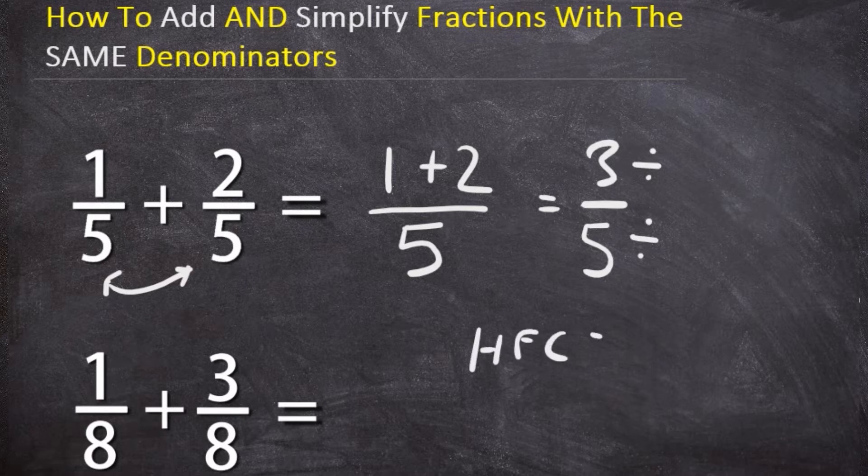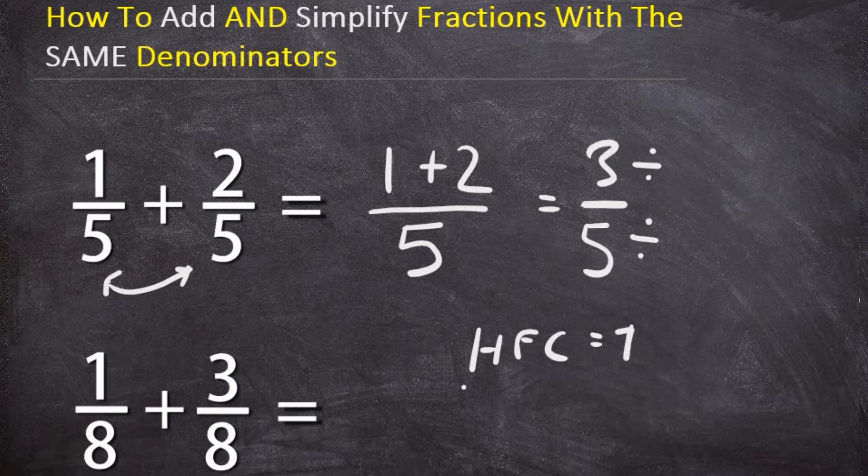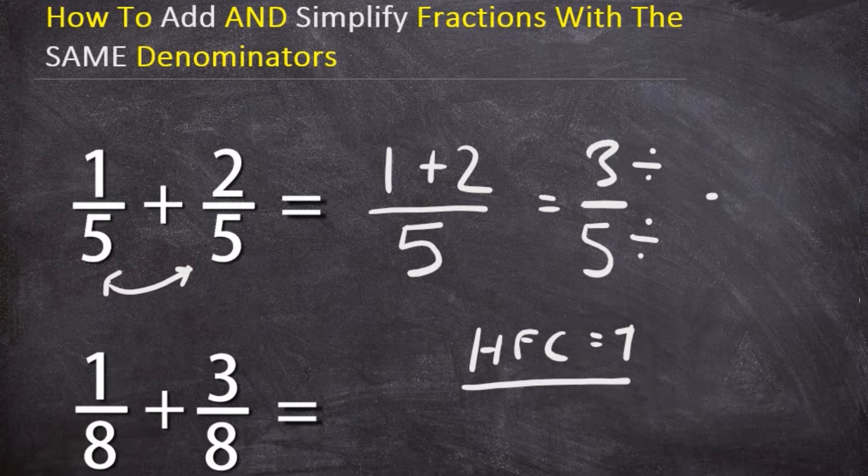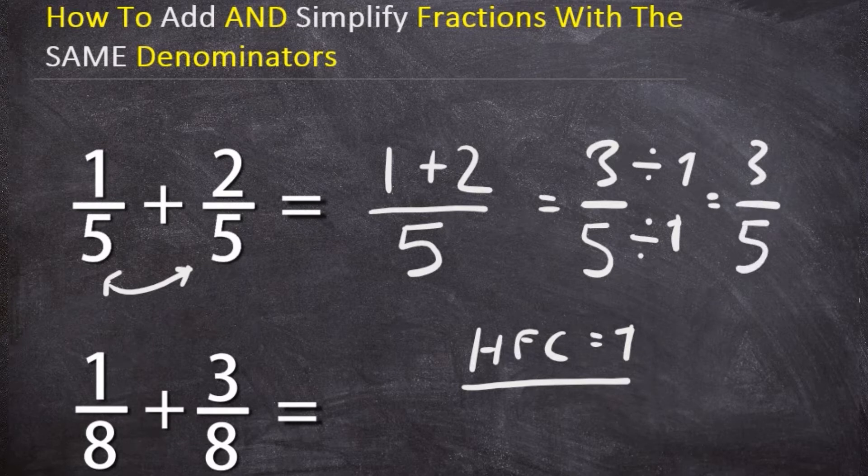The number has to be able to divide both numerator and denominator. Only one divides both: three divided by one equals three and five divided by one equals five. So dividing top and bottom by one gives three over five, which was the fraction we got in the first place. So three over five cannot simplify further. That's our final answer.